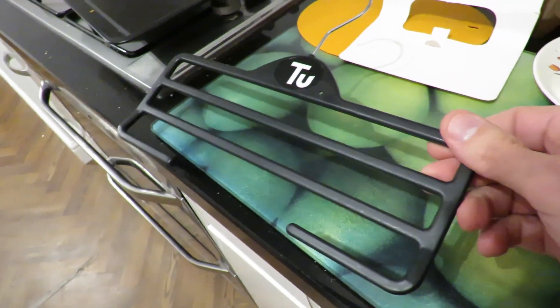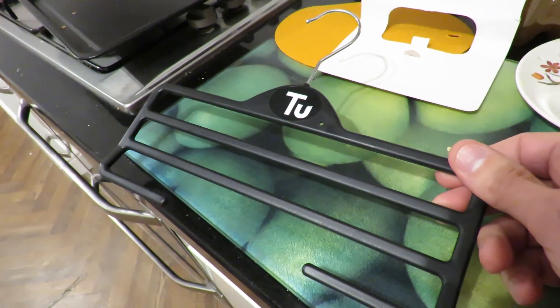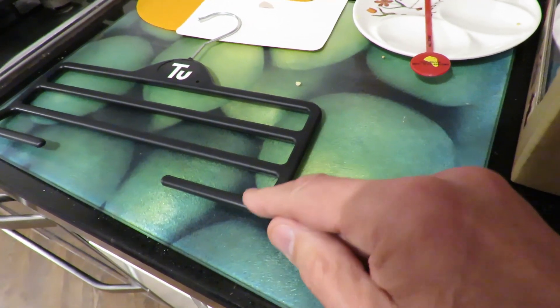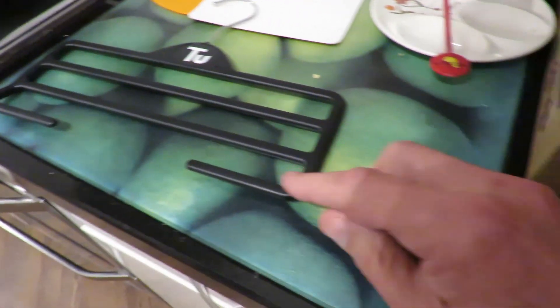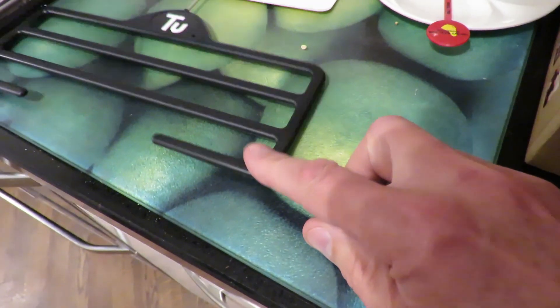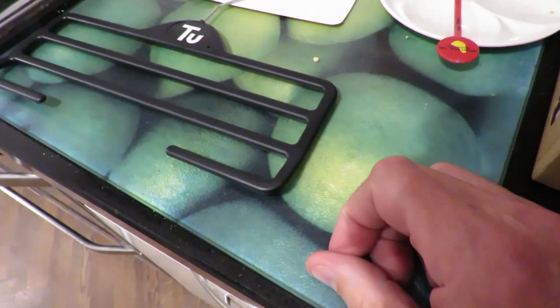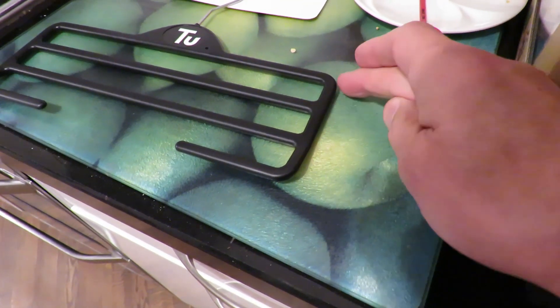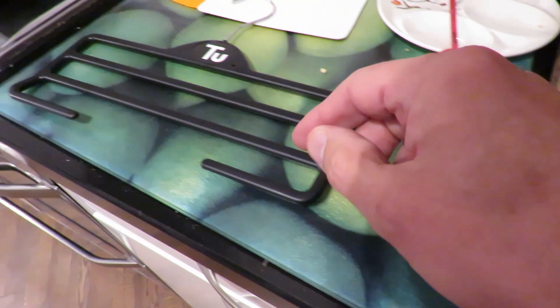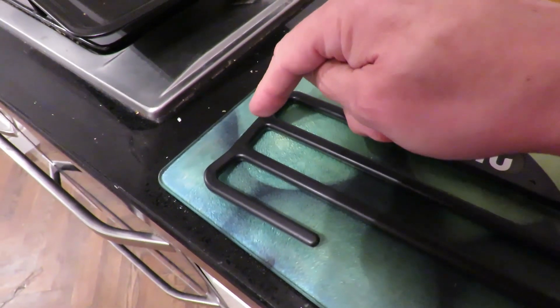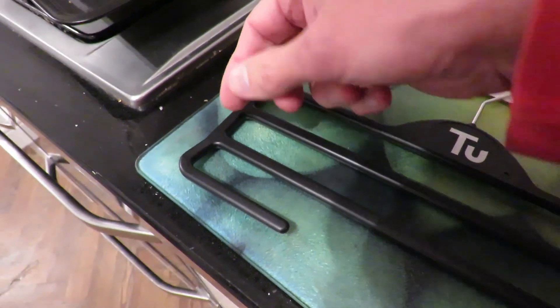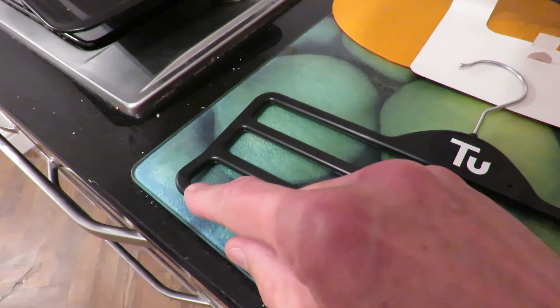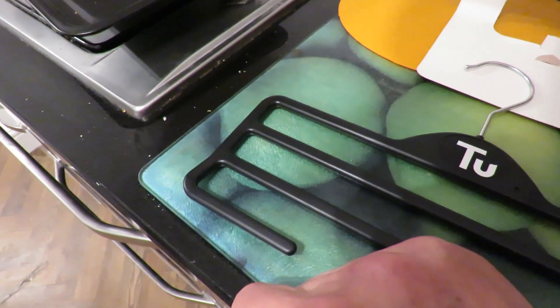So I just wondered whether I could make a rubber band powered car out of it. A couple of things that make it difficult. These bottom sections don't lie flat.